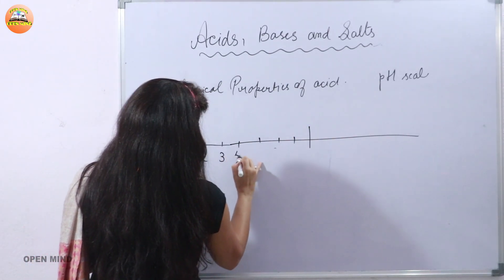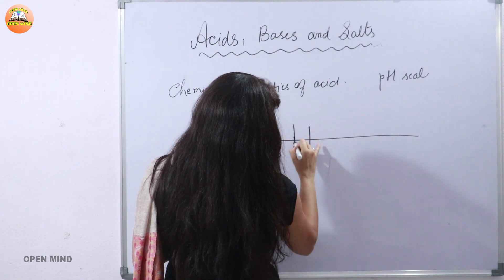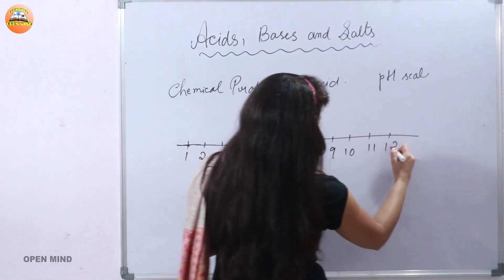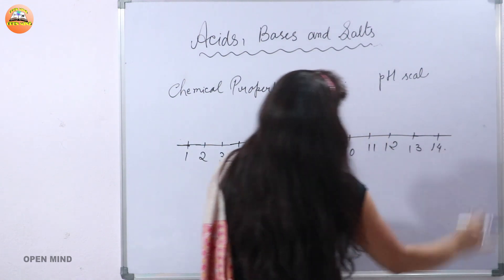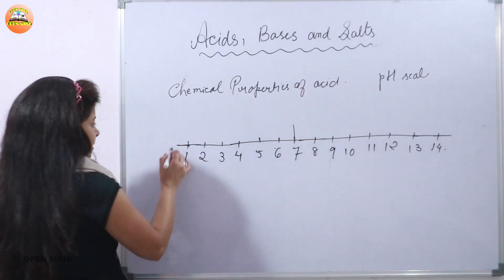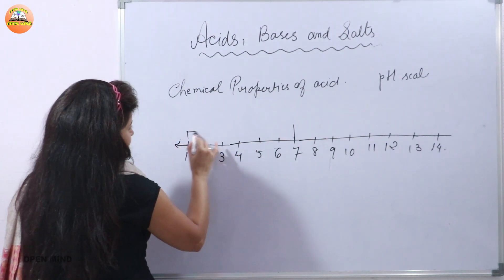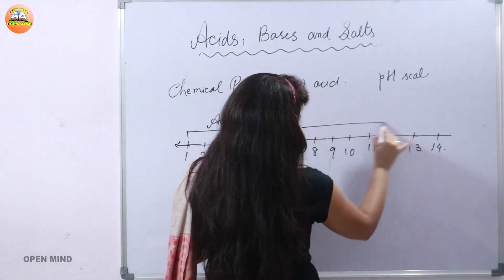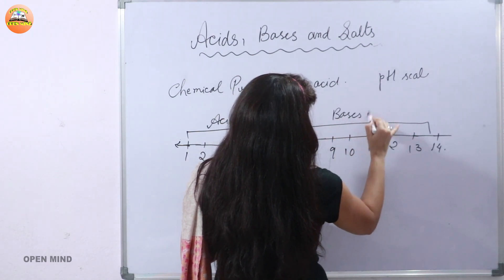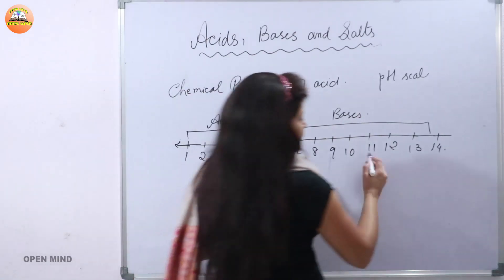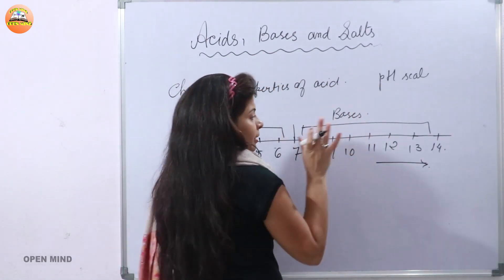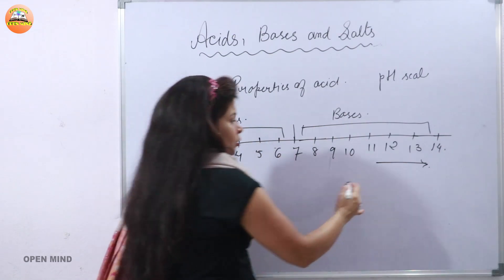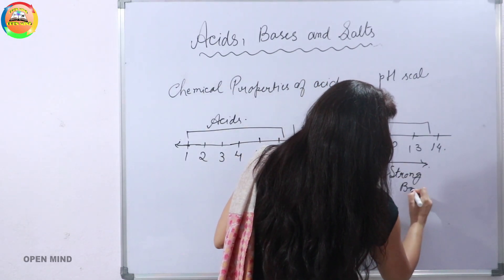The pH scale gives you values starting from 1, 2, 3, 4, 5, 6, 7 on the left, and 8, 9, 10, 11, 12, 13, 14 on the right. The pH values up to 7 are considered to be acids, and if the pH value lies from 7 to 14, they are considered to be bases. Compounds with a pH value near 13 or 14 are considered to be very strong bases.